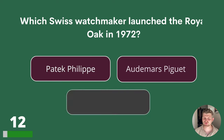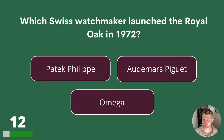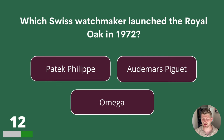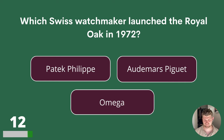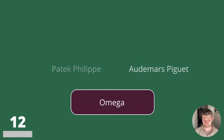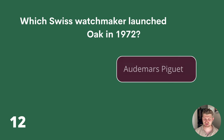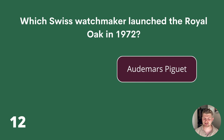Question 12. Which Swiss watchmaker launched the Royal Oak in 1972? Patek Philippe, Audemars Piguet or Omega? The answer is Audemars Piguet.